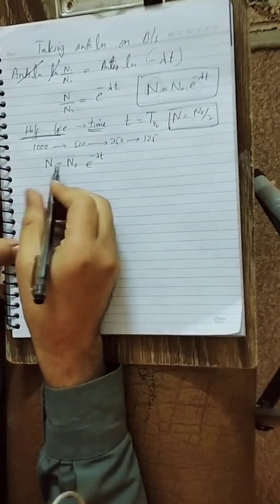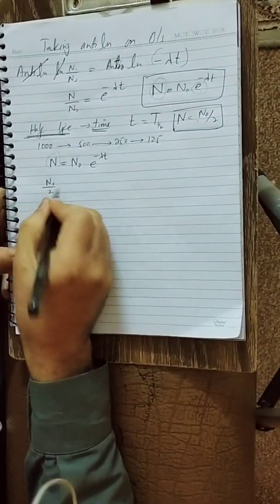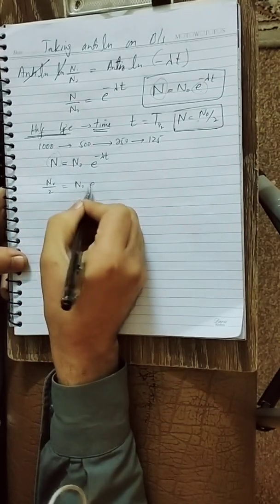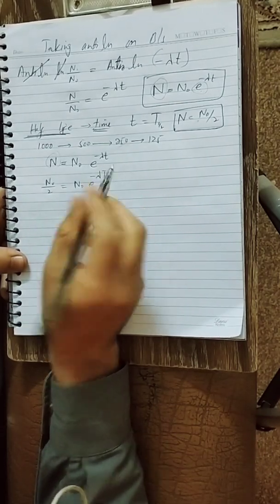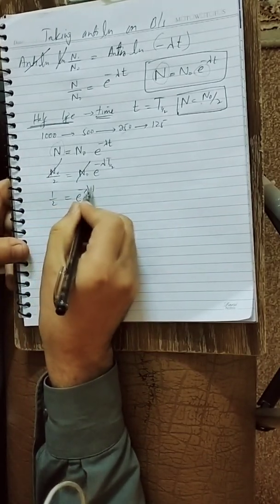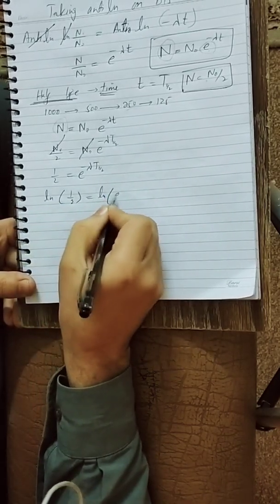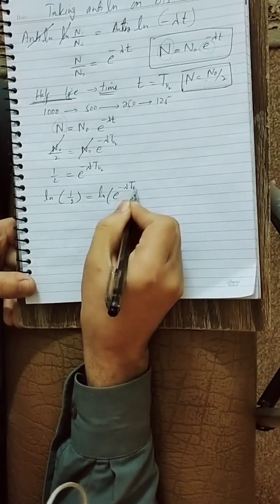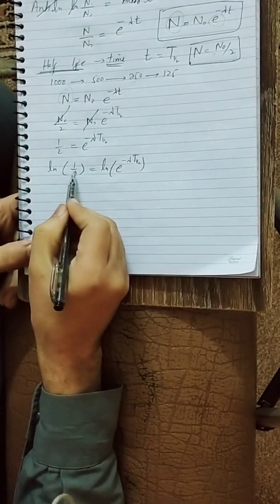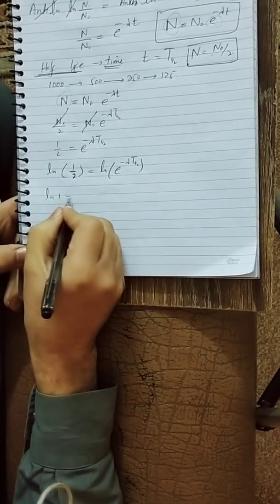Substituting into the decay equation N = N₀e^(−λt): put N = N₀/2 and t = T½. N₀ cancels, giving 1/2 = e^(−λT½). Taking the natural log on both sides, we apply logarithm properties.